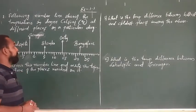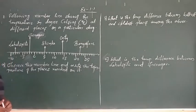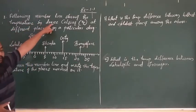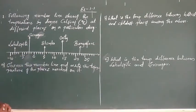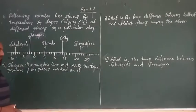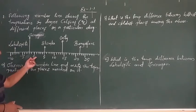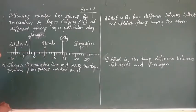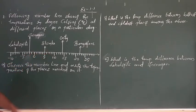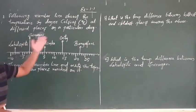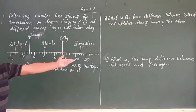In that chapter, the first exercise is 1.1. The first question involves following the number line. The number line shows the temperature in degree Celsius at different places on a particular day. Here, zero is in the center; the right side of zero has all positive numbers — positive integers — and the left side of zero has negative integers.